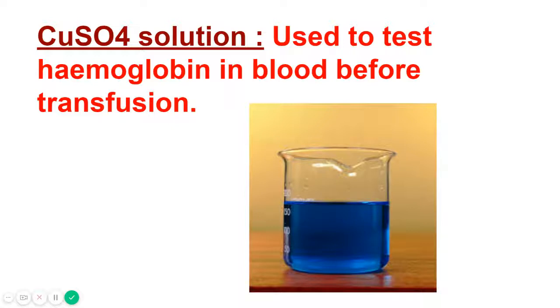Now let's see the use of copper sulfate and barium sulfate. The copper sulfate salt solution is used to test hemoglobin in blood before transfusion. Hemoglobin is the red pigment in red blood cells.